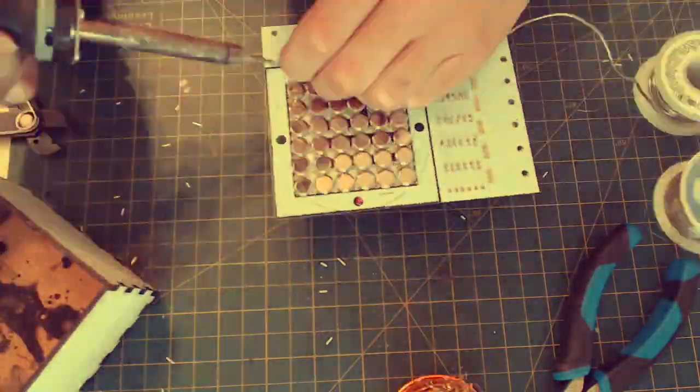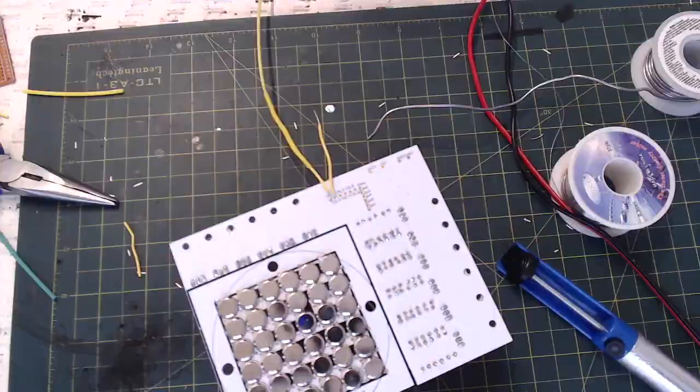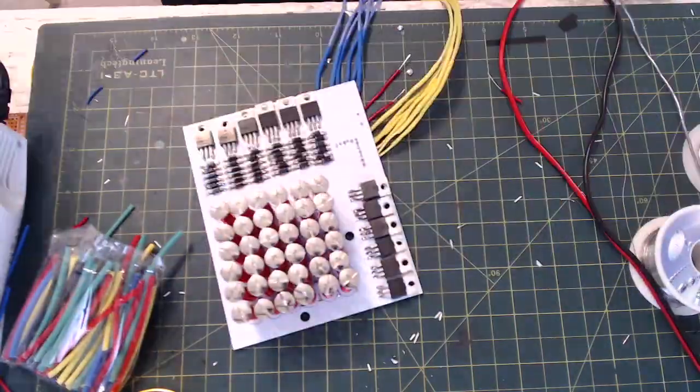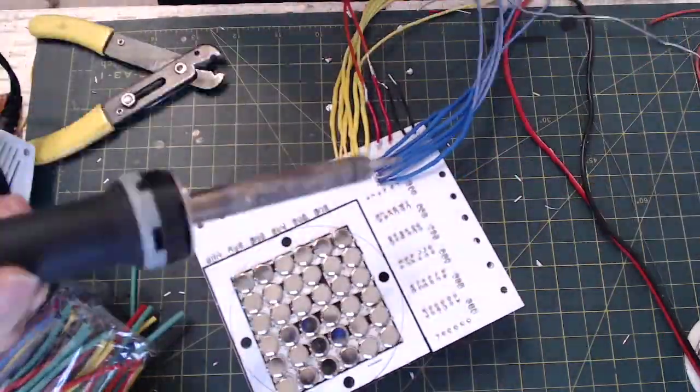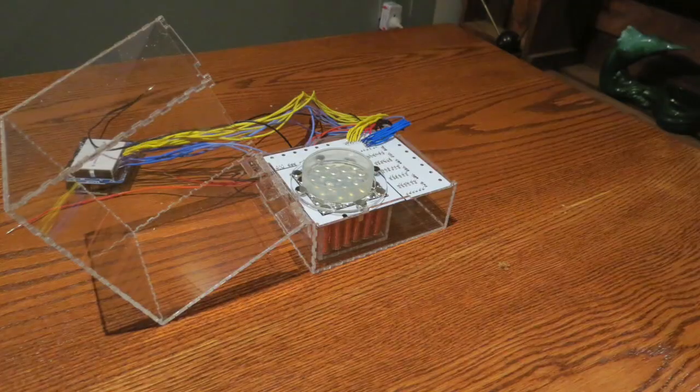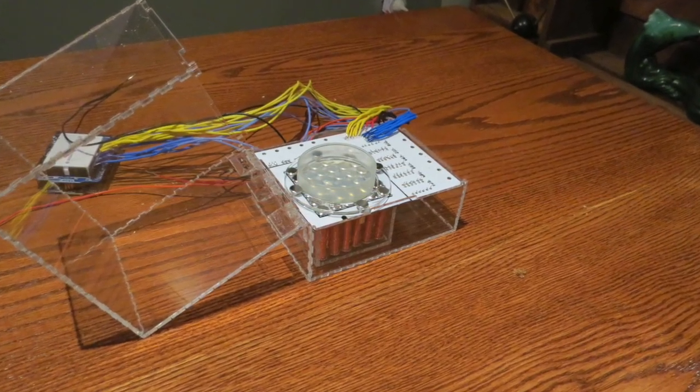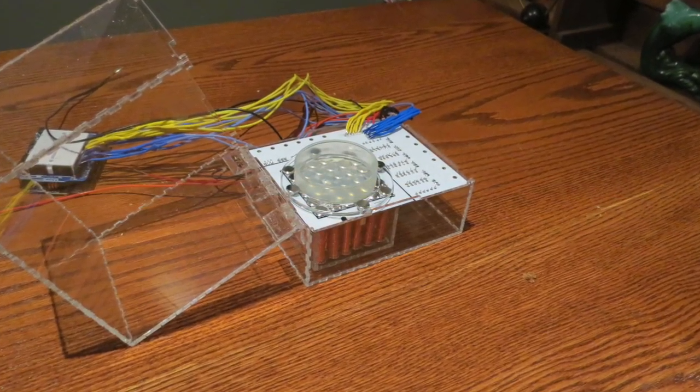There's one thing I didn't consider, and that was I placed vias directly below the screw heads of my Chicago screws. To avoid making short circuits, I covered them with electrical tape. I then placed the board inside a laser-cut acrylic container assembled using chemical cement and acrylic hinges.